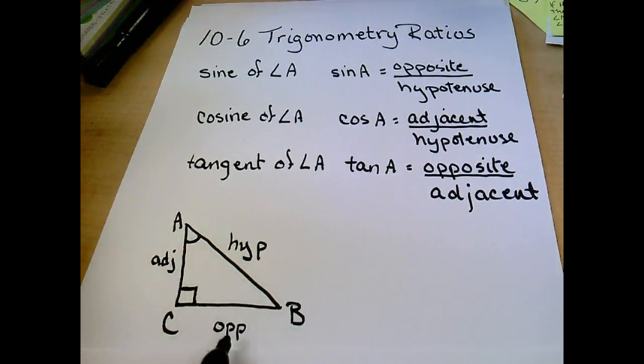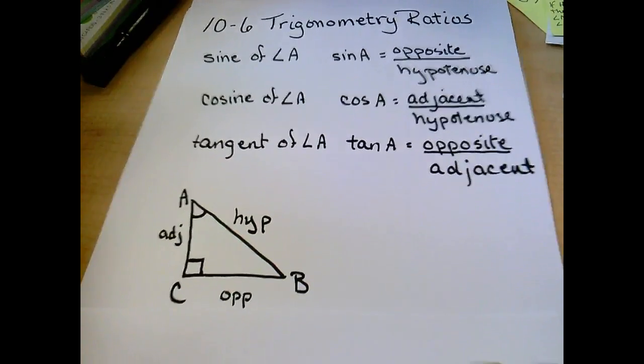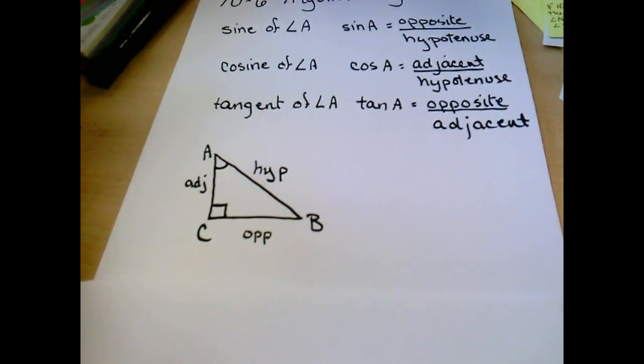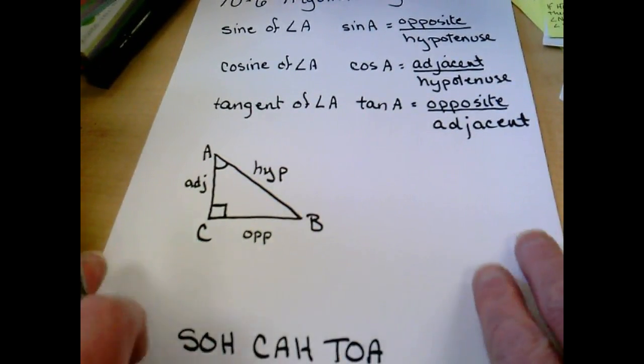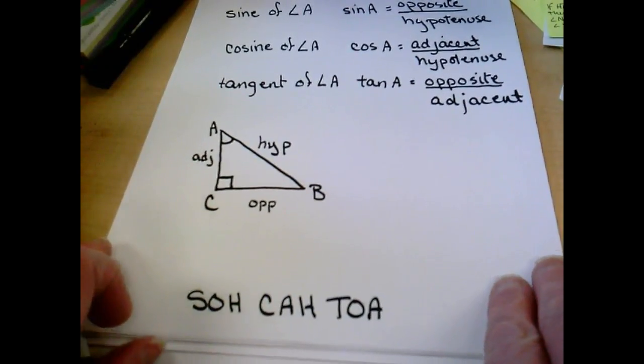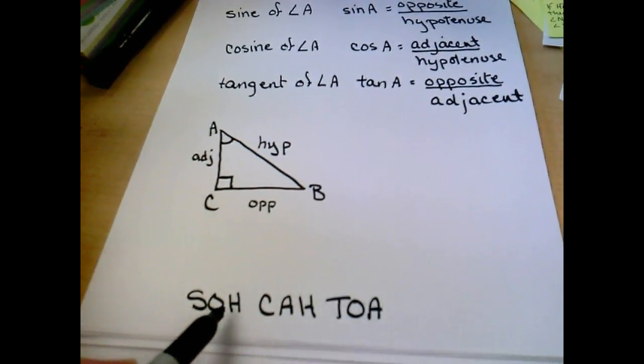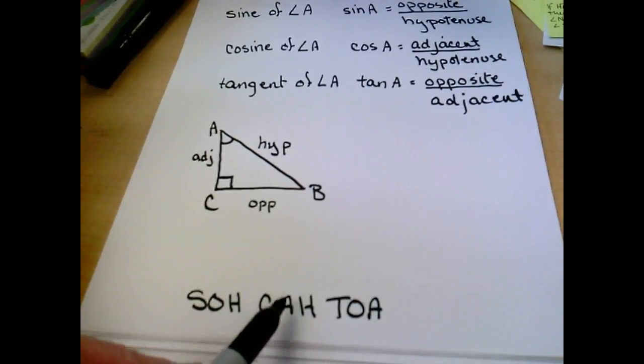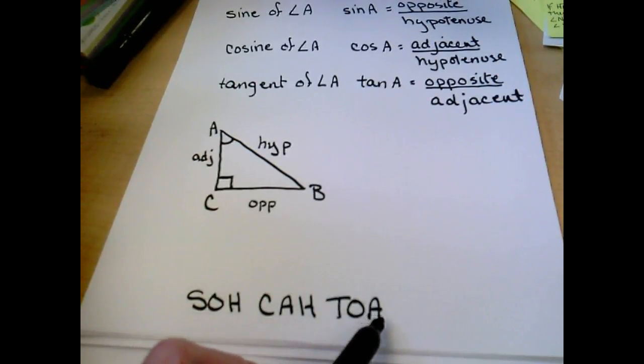So we would use side CB's length over AB's length. One way to remember this is by using SOH-CAH-TOA. Sine is your opposite over hypotenuse. Cosine, adjacent over hypotenuse. Tangent, opposite over adjacent.